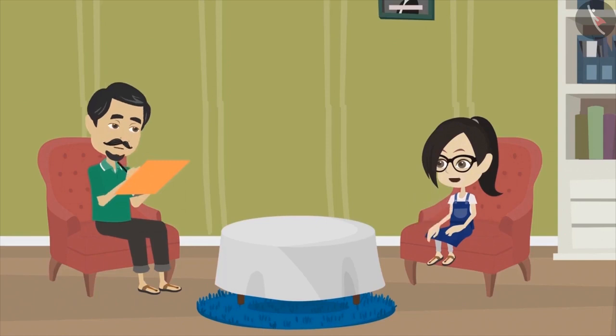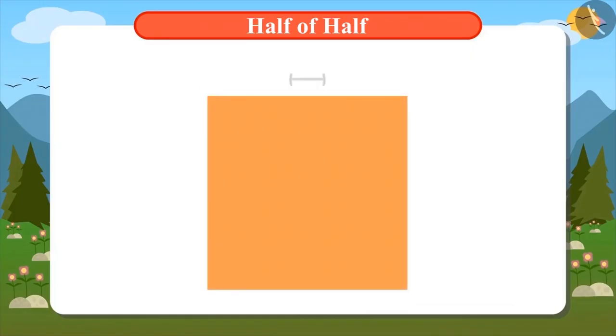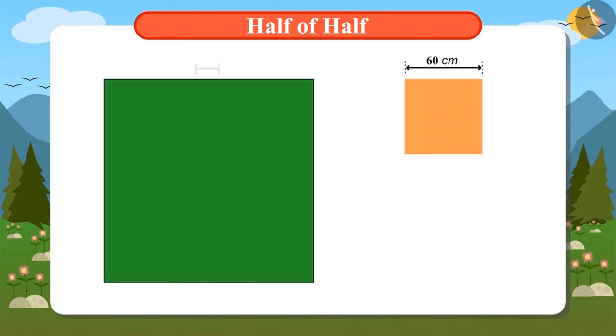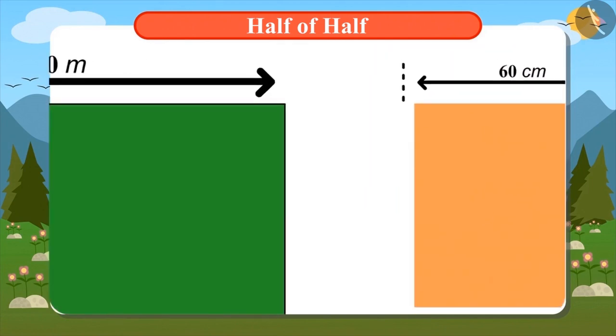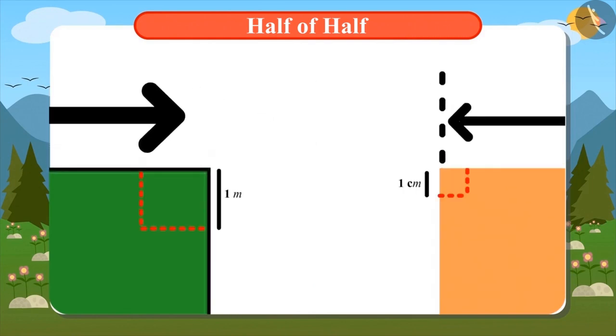But what are you writing on the paper? This paper shows our field and its measurements. The length of our field is 60 meters and the length of this paper is 60 centimeters. That means, one meter of the field is taken as one centimeter on paper.